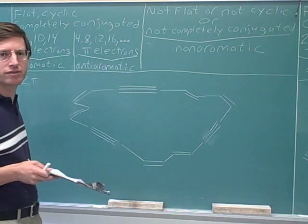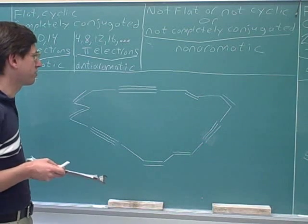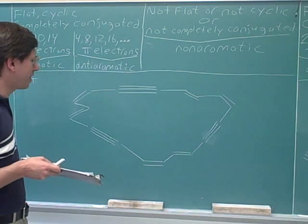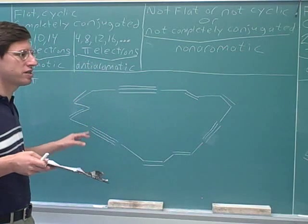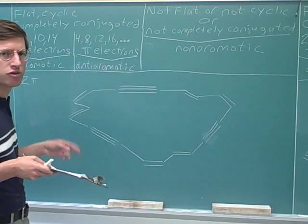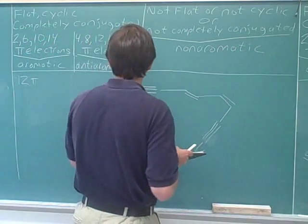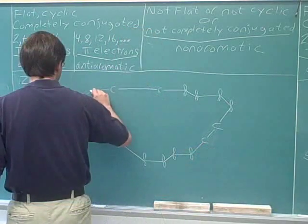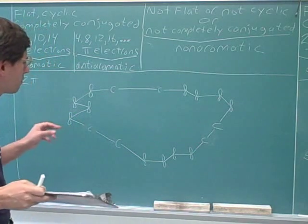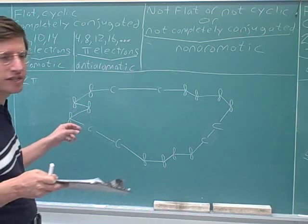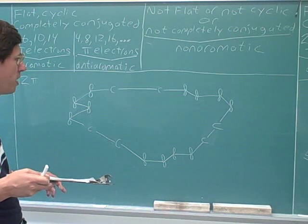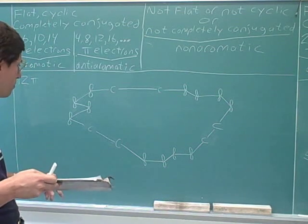But how about the triple bond? We know that the triple bond consists of one sigma and two pi bonds. It's going to be easier to deal with that if instead of drawing things as double and triple bonds, we draw in the p orbitals. So I'm going to erase all the double and triple bonds and replace them with p orbitals. So far I've erased all the double bonds and replaced them with overlapping p orbitals.